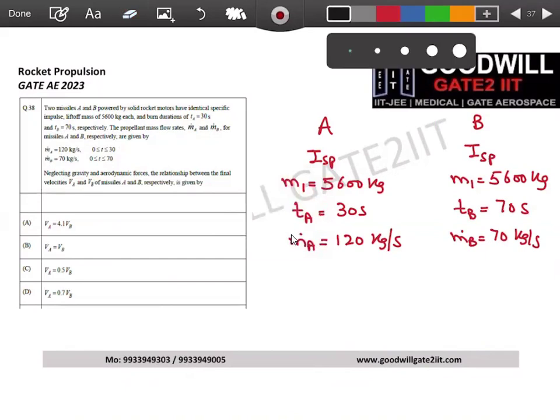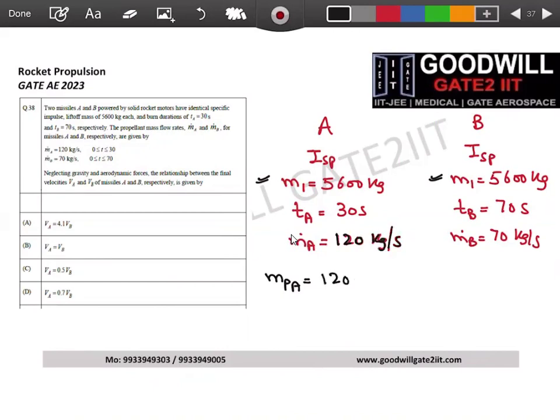Now everyone knows what is the final expression you need to calculate the velocities right? So tell me guys how you will work on this. m1 is known, I need to calculate amount of propellant burn for A and this is 120 kg every second and I am burning this for 30 seconds.